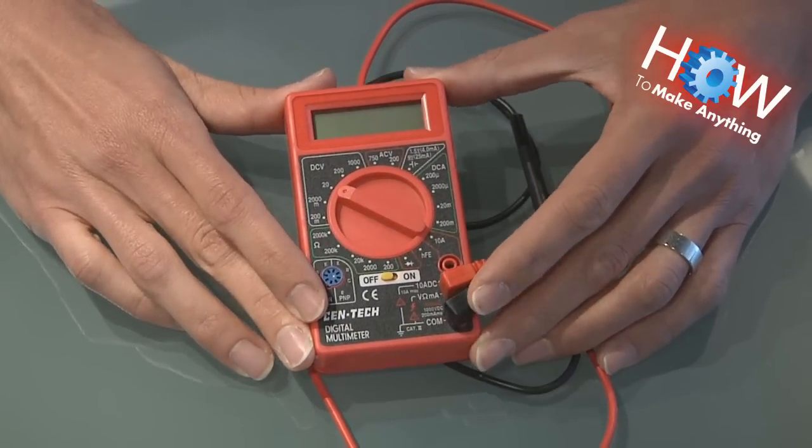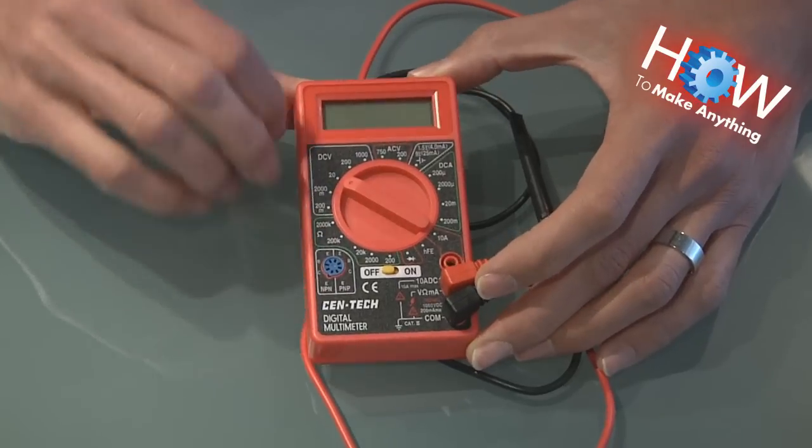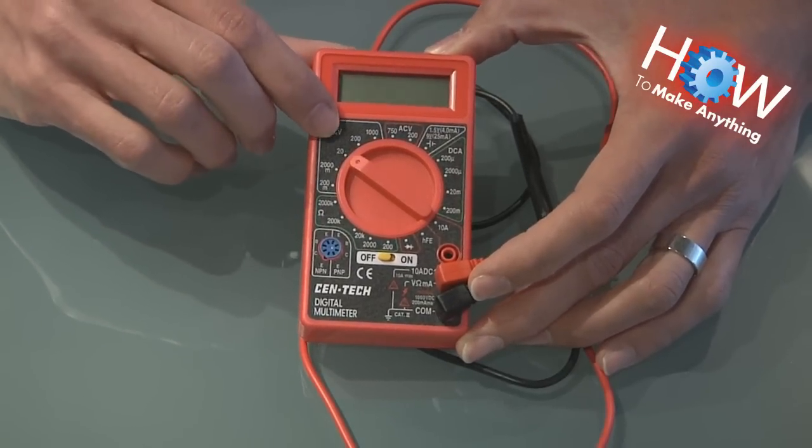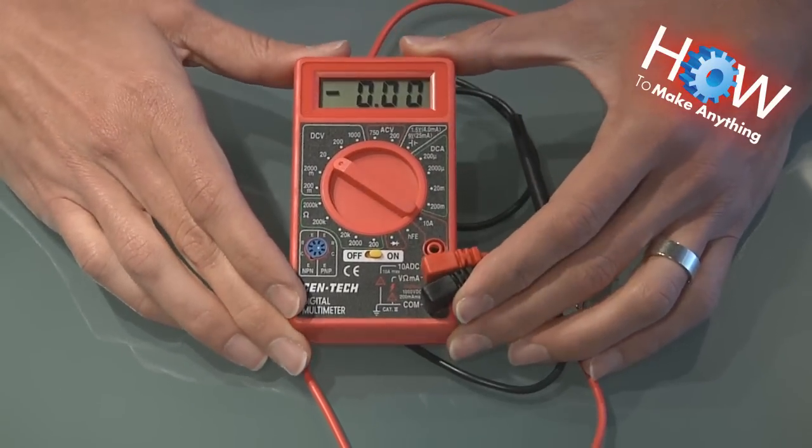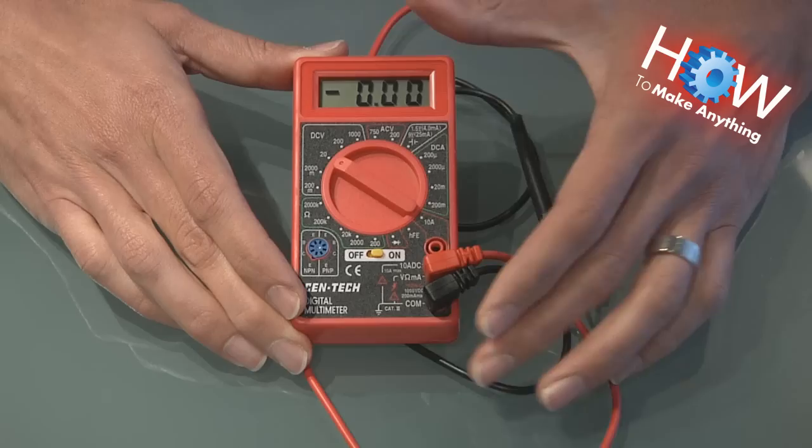You can get one of these at Harbor Freight Tools for about $5, and you turn it to this setting over here, the DC voltage, about 20. There's a little nice switch there, and you'll get a reading with a decimal point after the first digit.